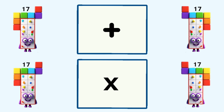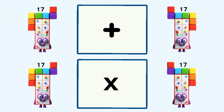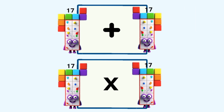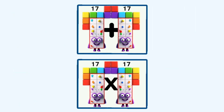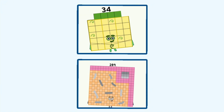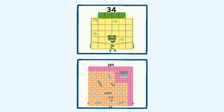17 plus 17 and 17 times 17 equals 34 and 289.